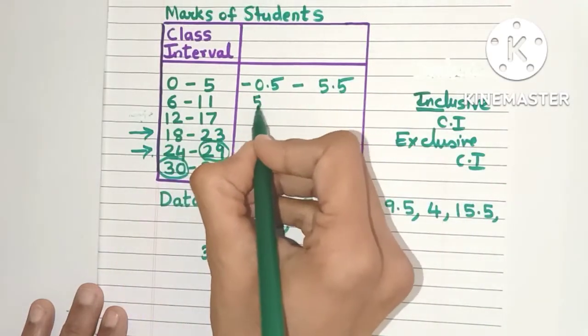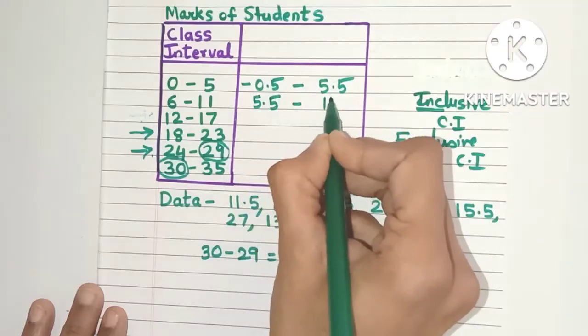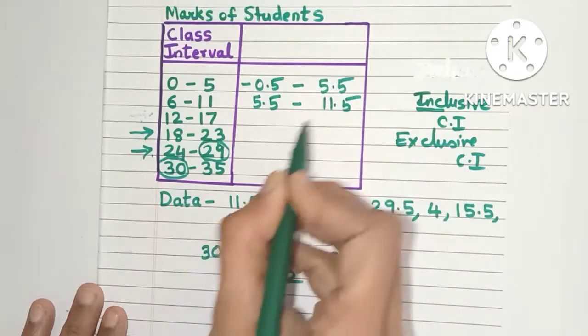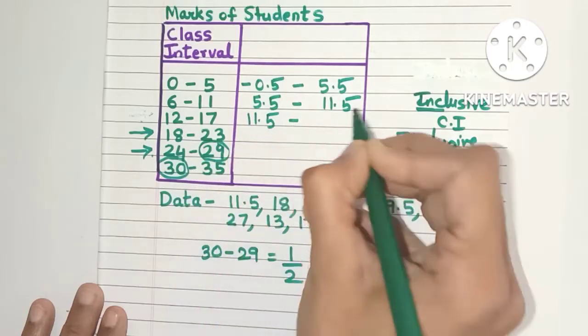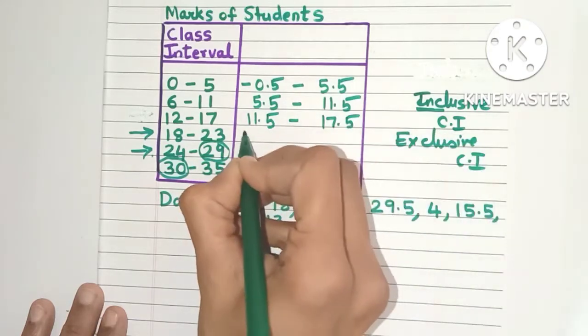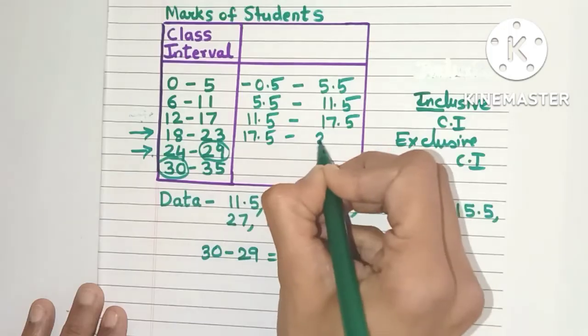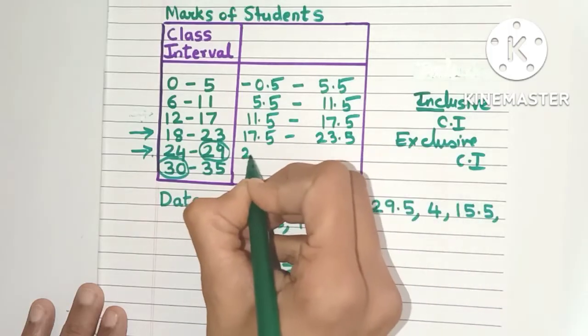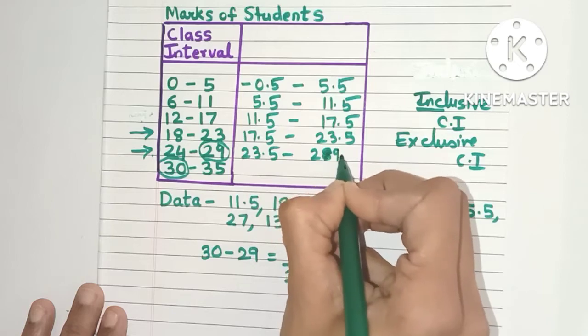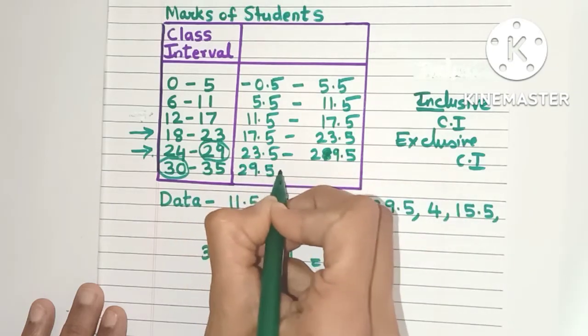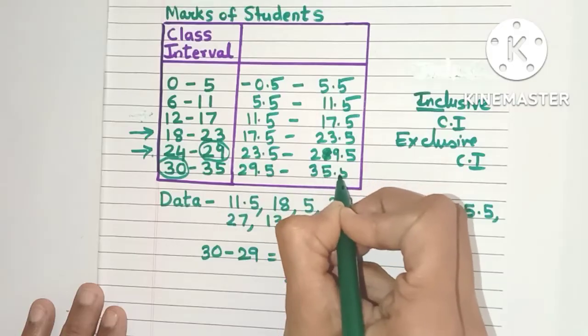Now similarly here I will get 5.5 to 11.5. I just need to add here and subtract here. So let's start doing for all the class intervals this way. I will get 17.5 and 23.5 and 29.5. Here I'll get 29.5 to 35.5.